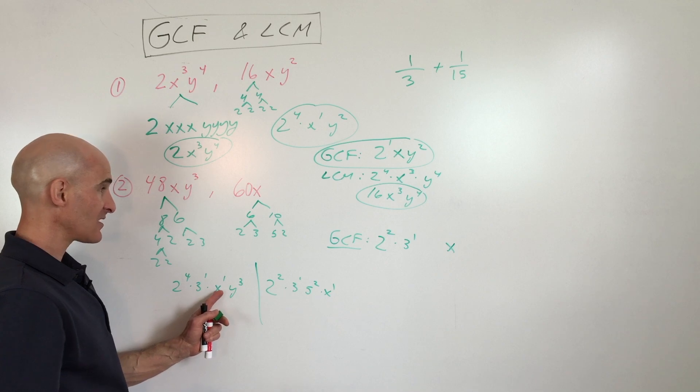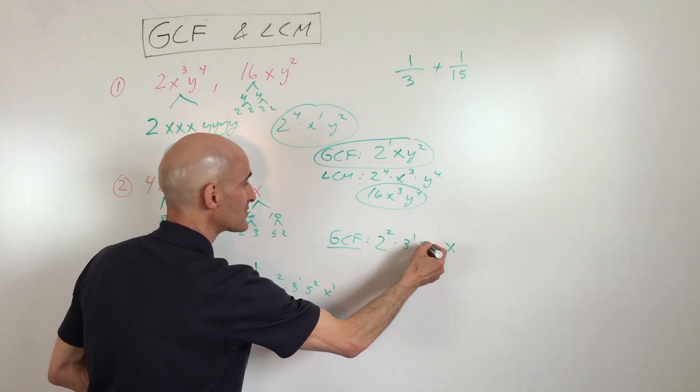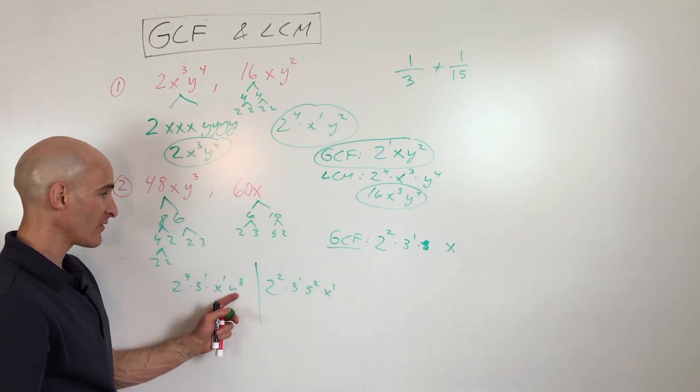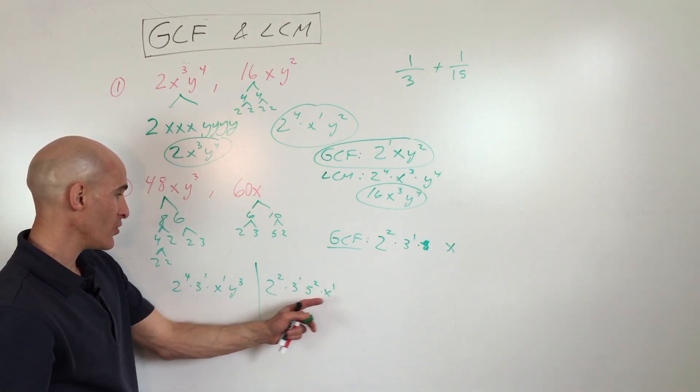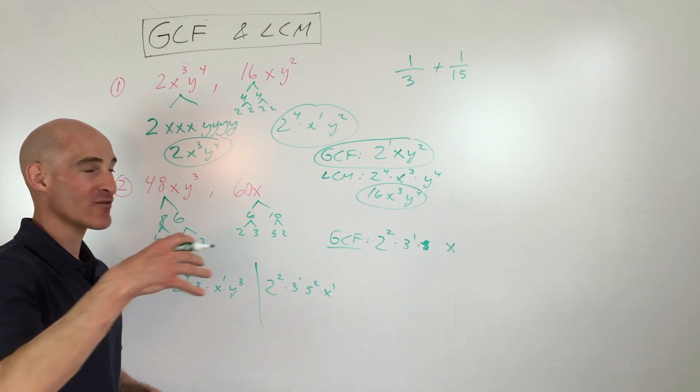We've got 2 fives and no fives. So we definitely need no fives. We take whatever occurs less. And we've got y³ and no y³. So we're going to just take no y³. So we're taking whatever occurs less.